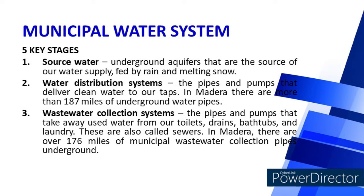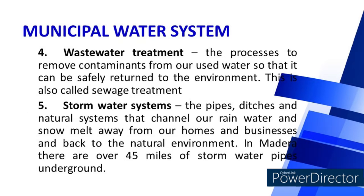These are also called sewers. The fourth is wastewater treatment — processes to remove contaminants from used water so that it can be safely returned to the environment, also called sewage treatment. And finally, the storm water system: pipes, ditches, and natural systems that channel rainwater and snowmelt away from homes and businesses and back to the natural environment.